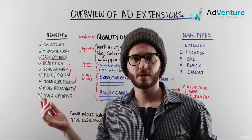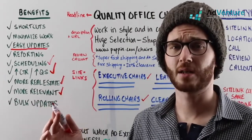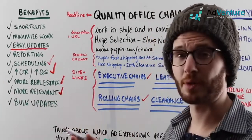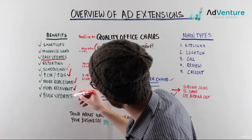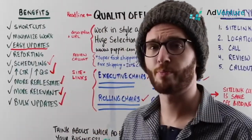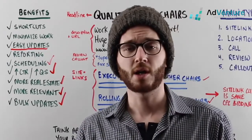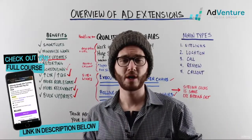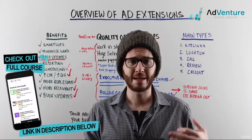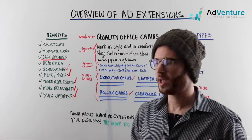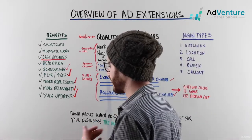In our accounts we've seen click-through rates go up 10–15%, which is huge — a gigantic increase just by using a variety of sitelinks. Another cool feature is bulk updates. If I have 10 campaigns running callout extensions or sitelink extensions, I can update them in bulk so I don't have to go into every individual ad group to update those extensions.